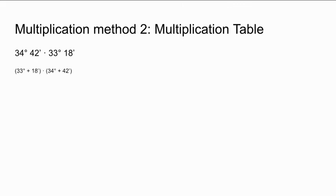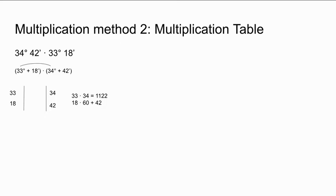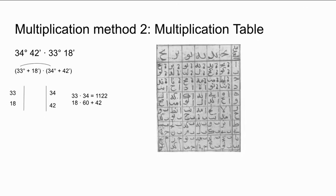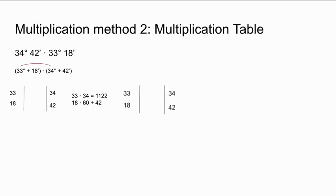The second method for multiplying sexagesimal numbers is the multiplication table. Let's multiply 34 degrees 42 minutes by 33 degrees and 18 minutes. This table is set up exactly like the addition table, with two lines and the larger number on the right and the smaller on the left. We now take the top left digit and multiply it with all digits on the right side. First, 33 times 34 equals 1,122, which broken into sexagesimal is 18 times 60 plus 42. During the Middle Ages, Islamic scholars used a sexagesimal multiplication table to complete the problems. We write 42 degrees aligned with the right side number and 18 first elevates in the units place above.